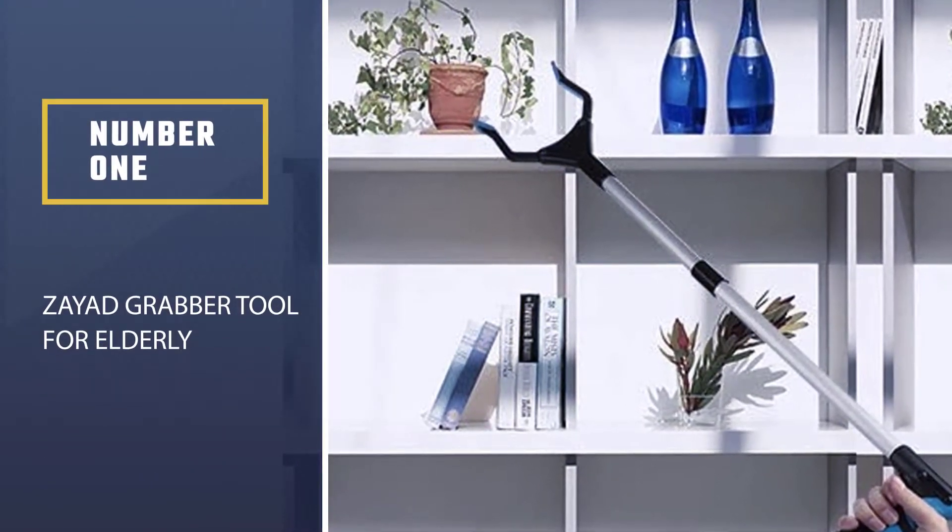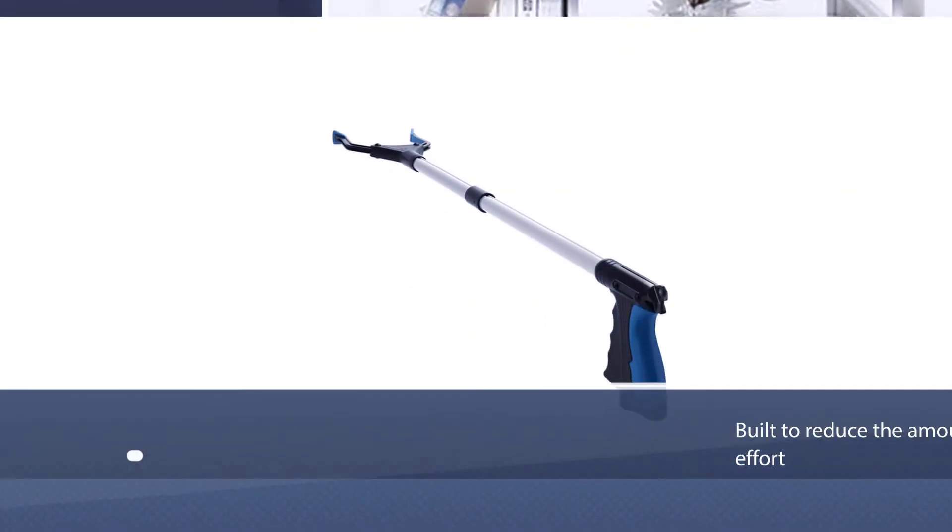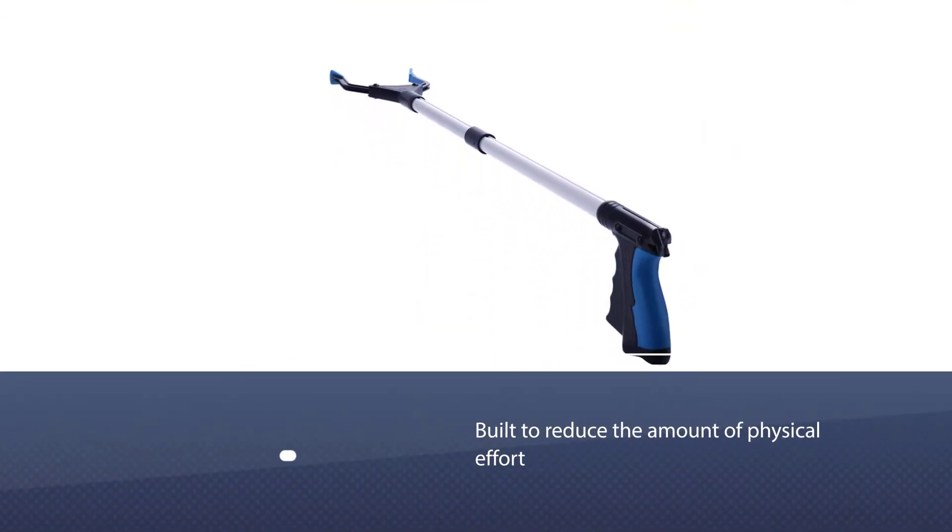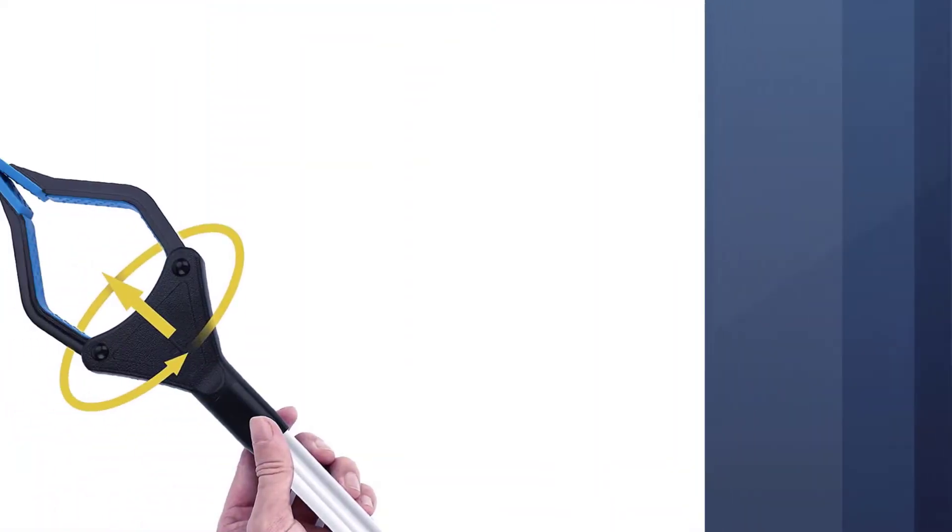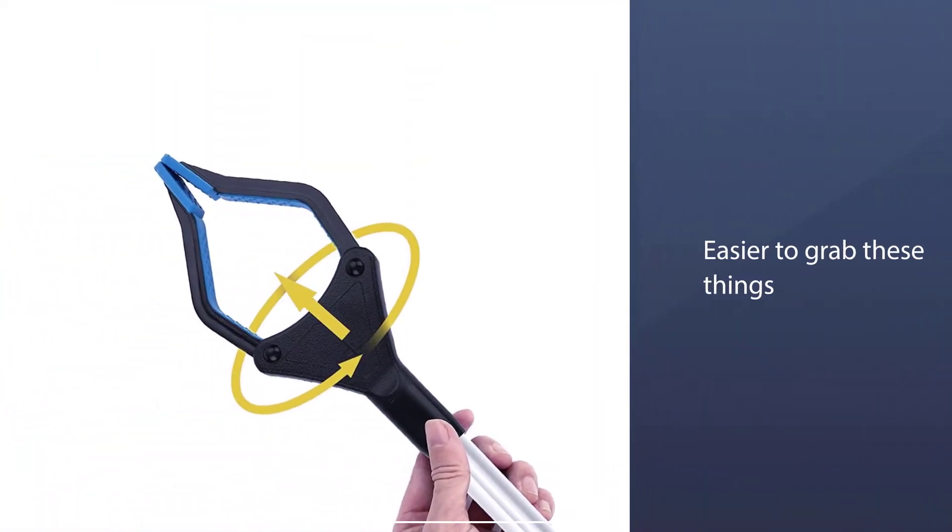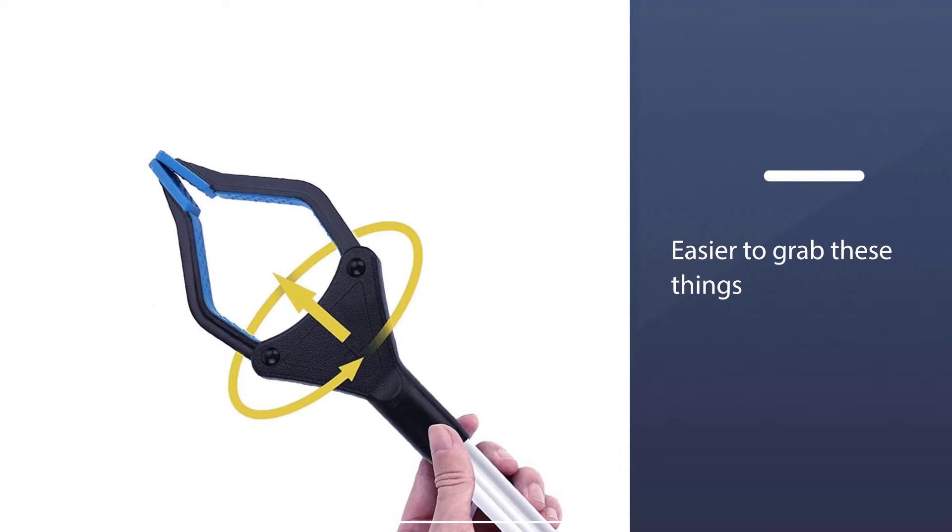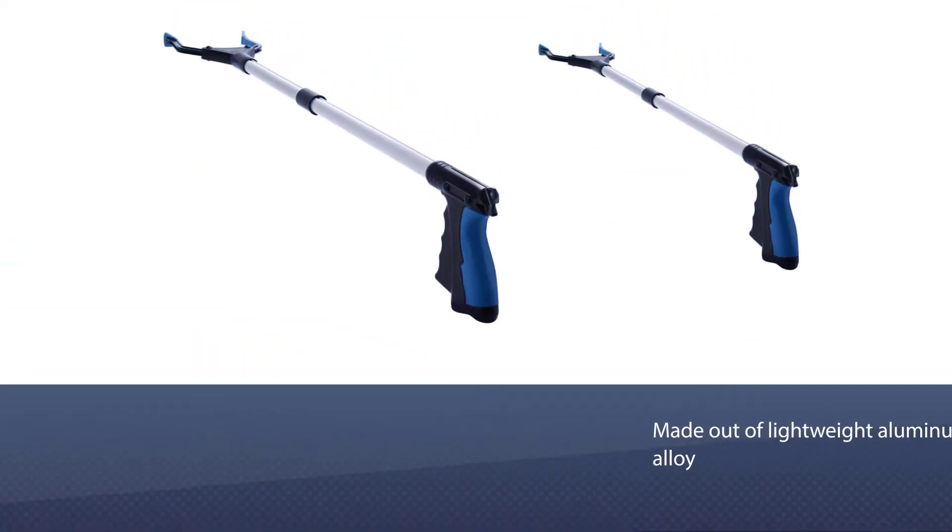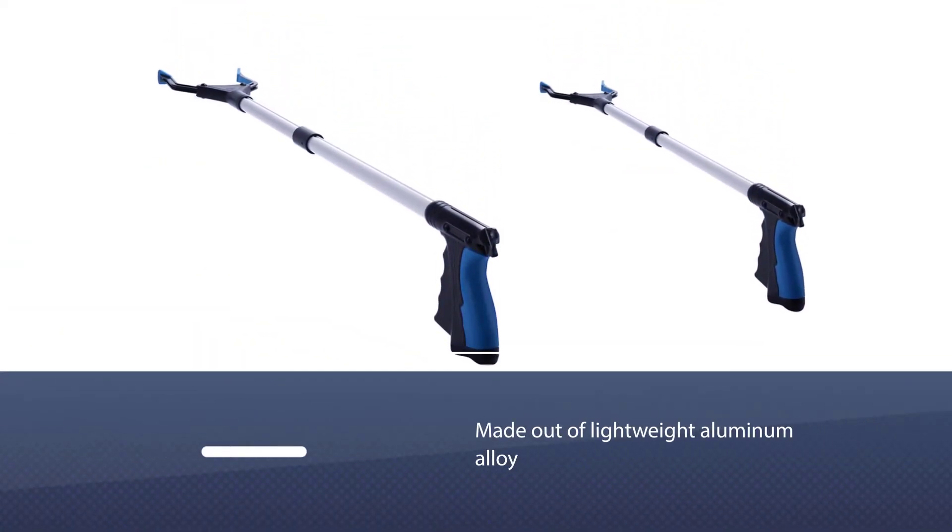ZAYAD Grabber Tool for Elderly. The ZAYAD reacher grabber tool is built to reduce the amount of physical effort you use to pick up things that are hard to reach and make it easier to grab these things. It's made out of lightweight aluminum alloy, making it easier to use for seniors with arthritis or carpal tunnel syndrome.